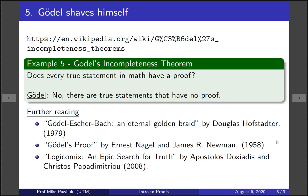The first one is called Gödel, Escher, Bach: An Eternal Golden Braid. It's a very famous book that many computer scientists read. Gödel is the mathematician we talked about; Escher is an artist known for self-referential and impossible paintings; and Bach was the composer.